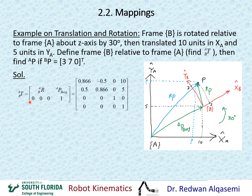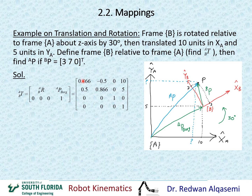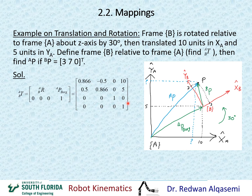First, I need to find the transformation matrix. T of B relative to A consists of the rotation of B relative to A and the position of B origin relative to A. Since the rotation is about the Z axis, the element in the Z row and column is 1 and the remainder of that row and column are zeros. Then we have cosine 30°, negative sine 30°, sine 30°, and cosine 30° in the 2D block. The position P of B origin relative to A is 10 units in X, 5 units in Y, and 0 in Z. The bottom row is [0, 0, 0, 1]. That defines the 4 by 4 transformation matrix.